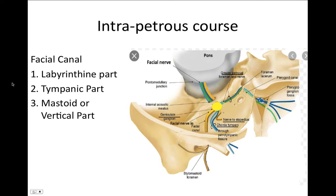Within the facial canal, there are three parts: the labyrinthine part, the tympanic part, and the mastoid or vertical part. The details of each will be discussed further.